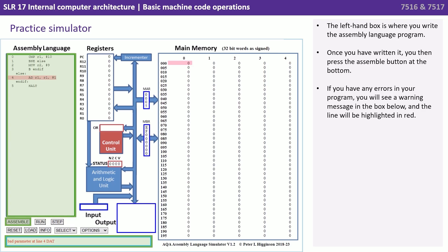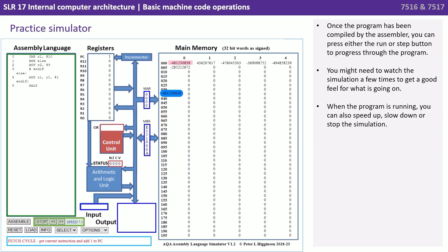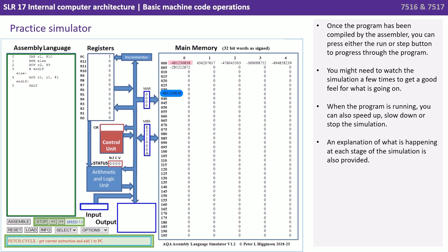The left-hand box is where you write the assembly language program. Once you've written it, you press the assemble button at the bottom. If you have any errors in your program, you will see a warning message in the box below and the line will be highlighted in red. Once the program has been compiled by the assembler, you can press either the run or step button to progress through the program. You may need to watch the simulation a few times to get a good feel for what's going on. When the program is running, you can also speed up, slow down, or stop the simulation. An explanation of what is happening at each stage of the simulation is also provided at the bottom.